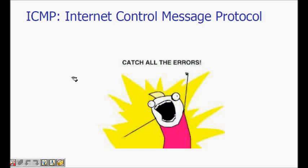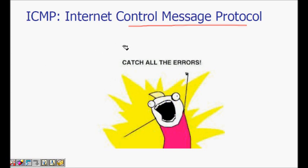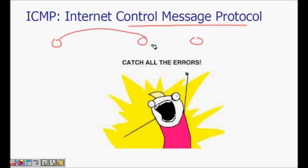In this lecture we are going to learn about Internet Control Message Protocol. ICMP is for error handling in the network layer. Different types of errors can occur in the internet, and ICMP is for reporting those errors and for debugging the network. For example, if we are sending a packet to some destination and the router cannot send that packet, it will send an error message saying it could not deliver the message to the destination.